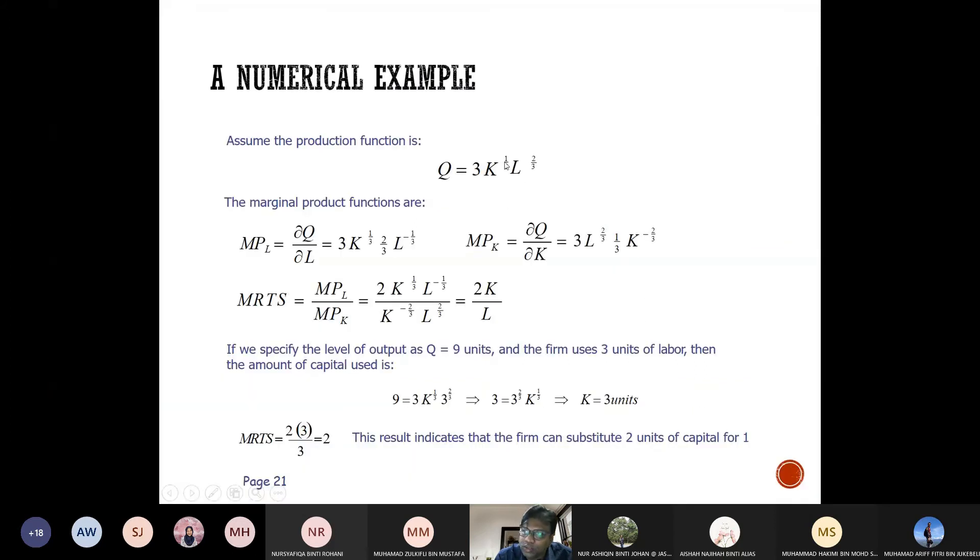So K is to the power of one-third and labor L is to the power of two-thirds. Now, the marginal product of labor function, as we know, is MPL = ∂Q/∂L.